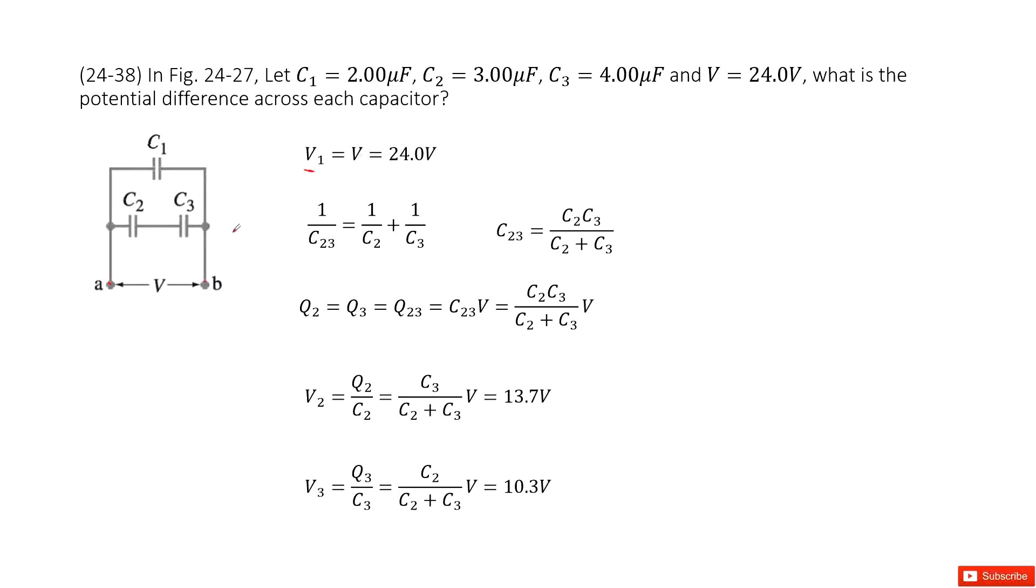Next, you need to find the potential difference for V2 and V3. How can you determine it? We can consider the charge in these branches. Q2 equals Q3 because they're in series. We can call this Q23.